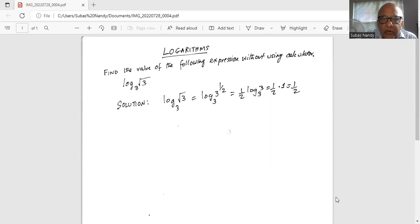Logarithm of square root of 3 to the base 3 can be written as logarithm of 3 to the base 3. The exponent is half because square root is equivalent to exponent half.